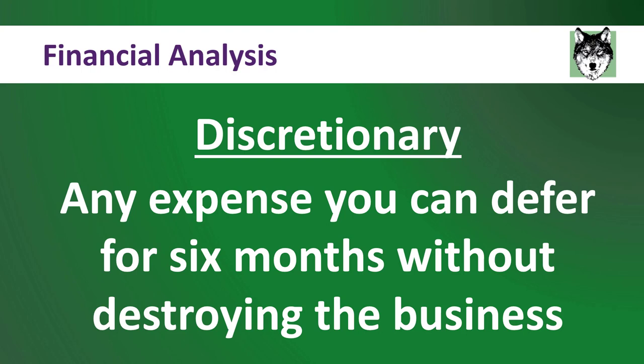For example, you cannot defer your rent for six months — you're going to be kicked off your property, so that is non-discretionary. You cannot defer your utility payments; they will turn the lights off on you, so that is non-discretionary. Under this definition, payroll is also non-discretionary — you have to pay your people. However, what is discretionary is bonuses. In most cases, you can go to your people and say we need to wait six months to pay out bonuses this year. That means it is discretionary.